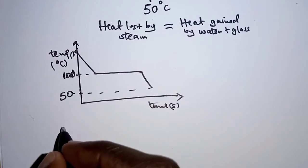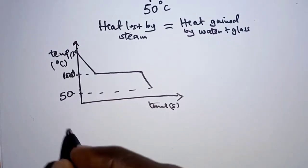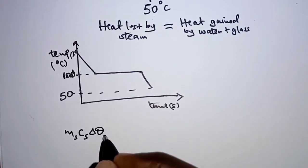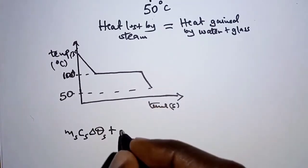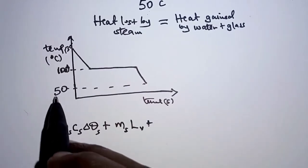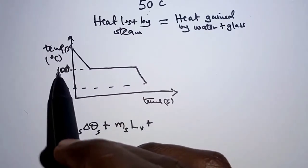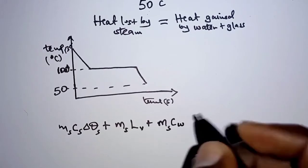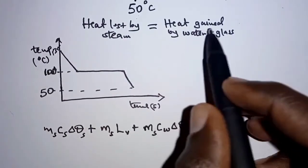The heat lost by steam has three parts. First, as temperature changes from 130 to 100°C: mass of steam × specific heat capacity of steam × temperature change. Second, during the change of state: mass of steam × latent heat of vaporization. Third, as temperature changes from 100 to 50°C (steam has now condensed into water): mass of steam × specific heat capacity of water × temperature change.